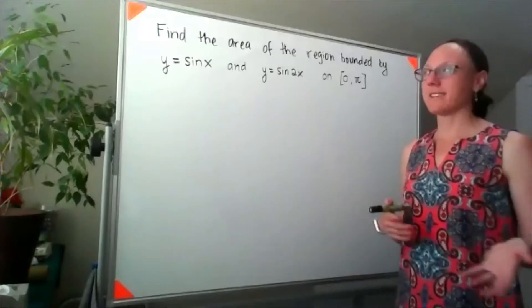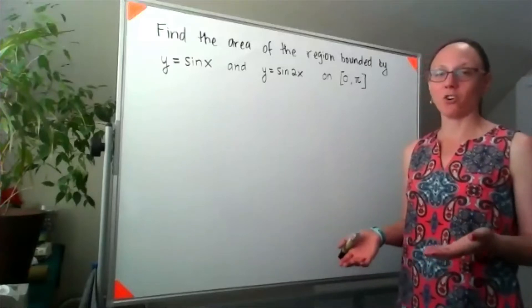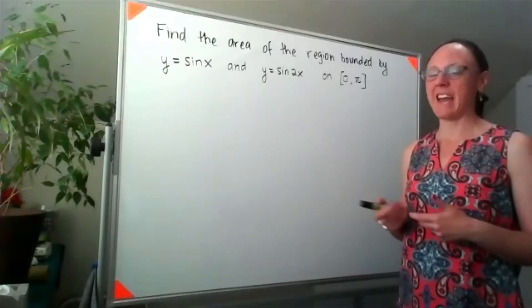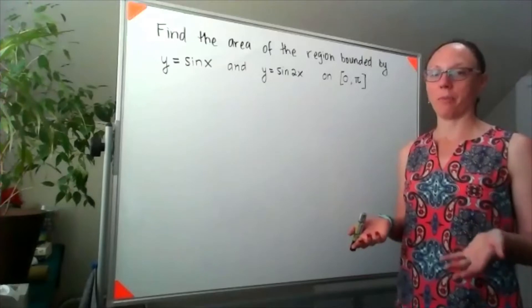I know before I said sometimes a fake graph is good enough. When it comes to sine of x and sine of 2x, I'm going to have to be a little bit more careful about the graph.